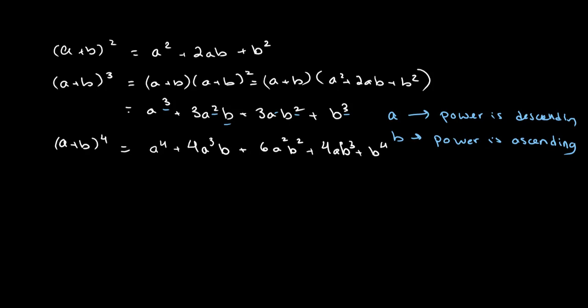We can do this for greater and greater powers — a plus b to the fifth or a plus b to the sixth. But the higher you go, the harder the algebra gets. Doing this would probably take you upwards of 10 to 15 minutes because of how many calculations are involved.